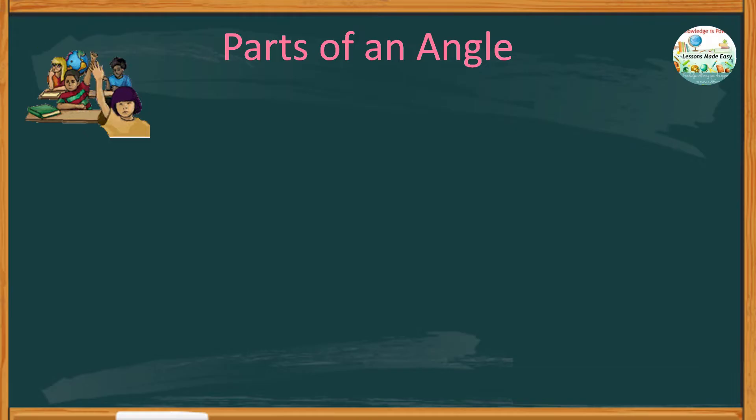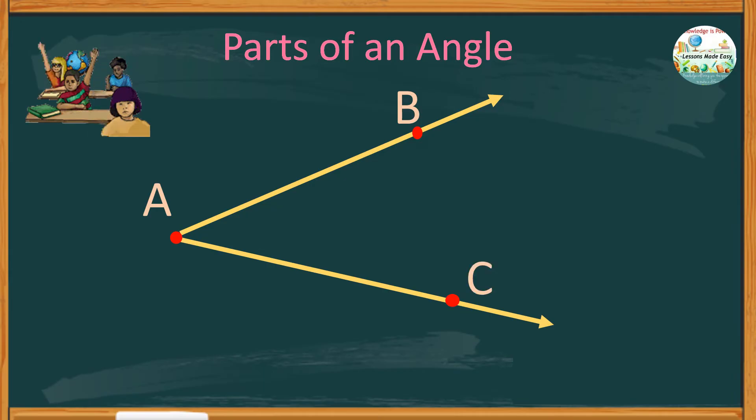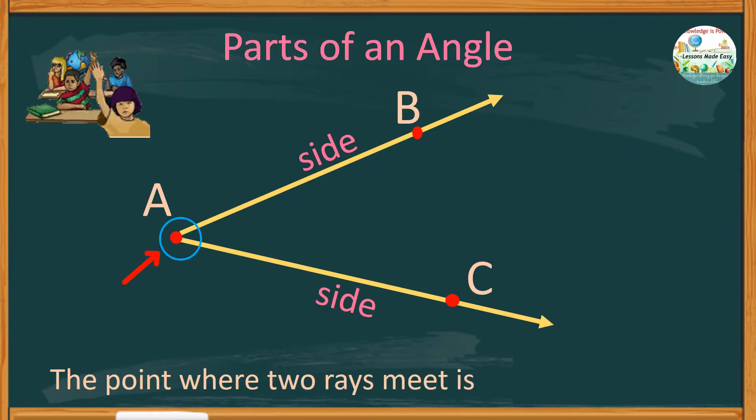Earlier, we have this example, ray AB and ray AC. They share the same endpoint, and that is point A. These two rays are the sides of the angle. And the point where the two rays meet is what we call the vertex.